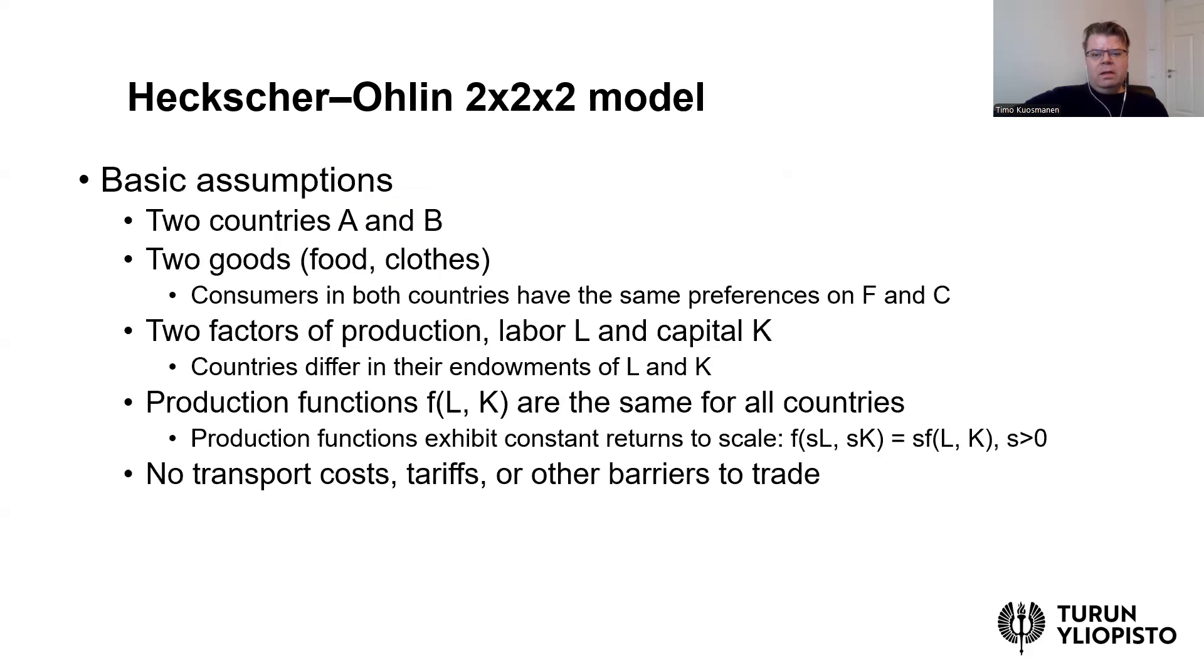So let's look at this model in more detail. I don't go to the technicalities of this general equilibrium model, but we can think about it as this two times two times two model. Basically in the model we have two countries, A and B, similar to David Ricardo's model. David Ricardo had England and Portugal, but now we have just more abstract A and B, could be Finland and Sweden for example.